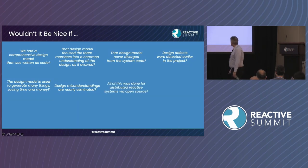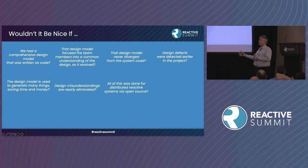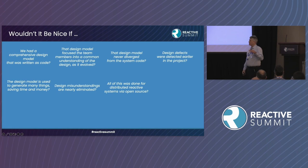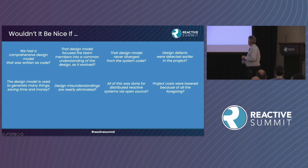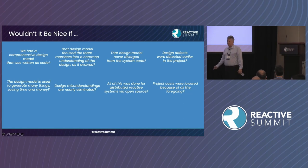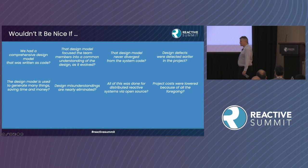All of this was done for distributed reactive systems — it's really focused on that. This isn't going to design an app for you; it doesn't even have a notion of color. But it's an open-source project aimed at distributed reactive systems. Project costs are lowered because of all the foregoing — remember at the beginning I was talking about mounting costs through the software development life cycle, and this was all aimed at reducing cost.